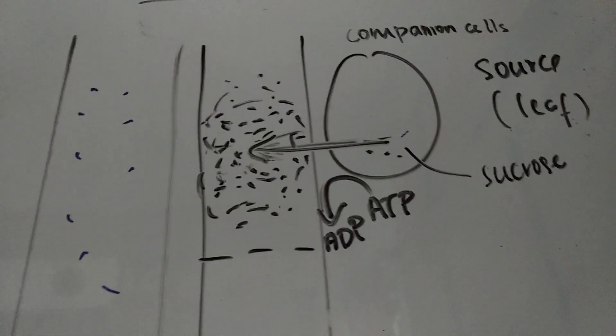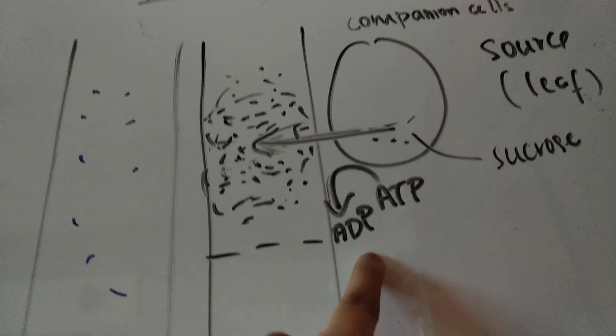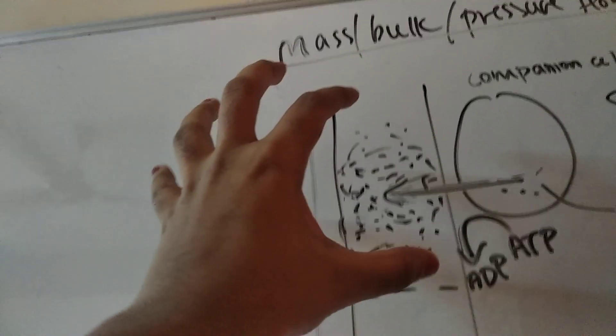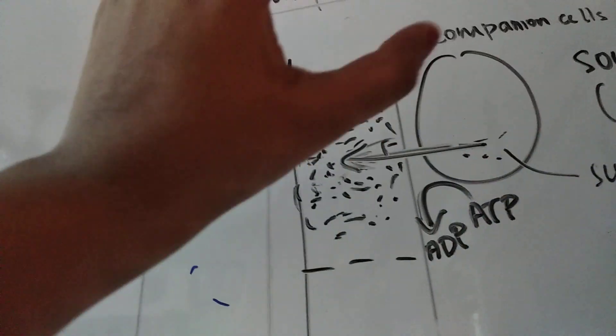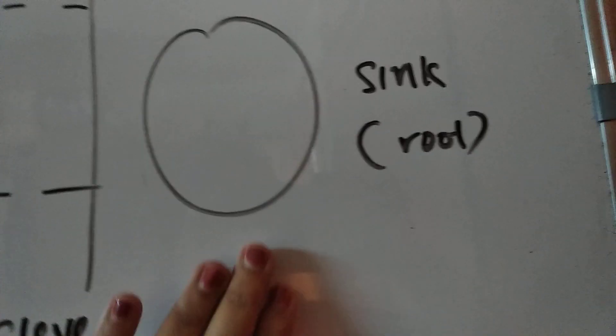So we literally used one ATP. We did active transport. This is known as loading. So we loaded all of the solutes into the phloem to send it to our sink.